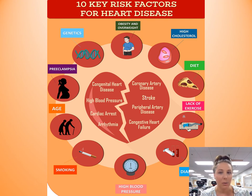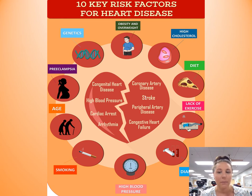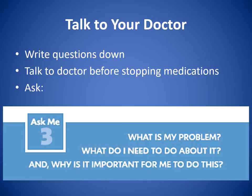If we can make the changes that we need to, knowing that we have family history of heart disease, knowing that we are getting older, I can control what my diet is and help lower my cholesterol, help lower my blood pressure, not smoke. Whenever you see your doctor, these are great questions to ask. Write your questions down before seeing your doctor and bring that list in. Always talk to your doctor before stopping any medications. The best three questions: What is my problem? What do I need to do about it? And why is it important for me to do this? When you ask those questions, you're opening up a dialogue and more communication with your doctor that allows you to better understand your health.